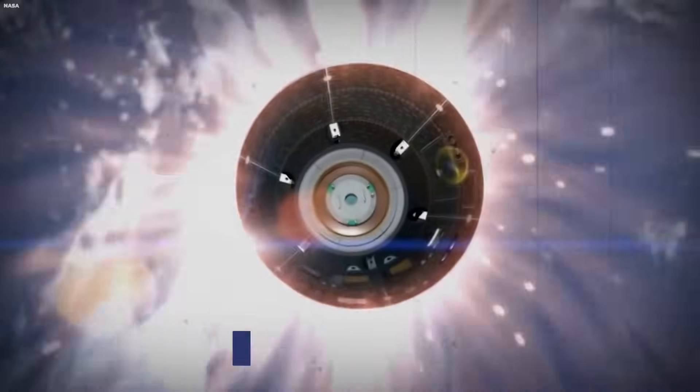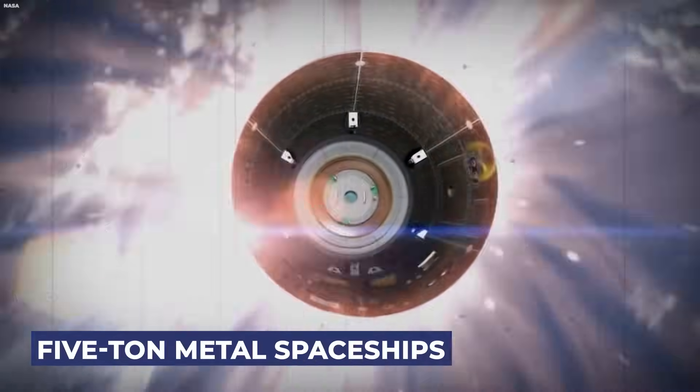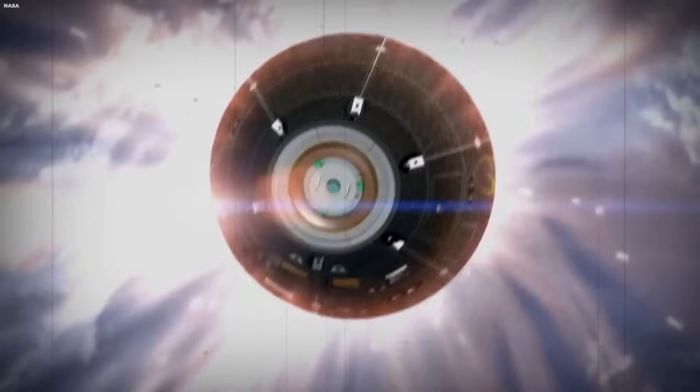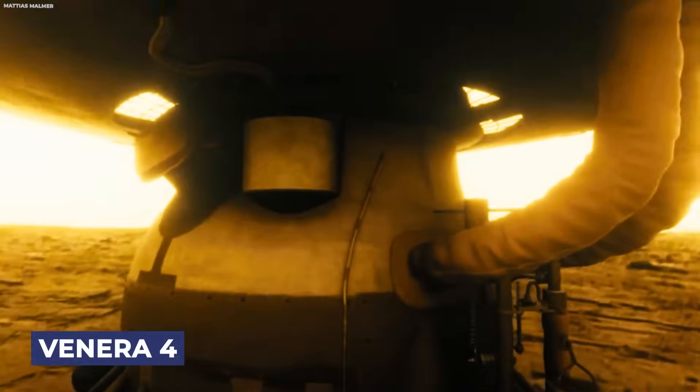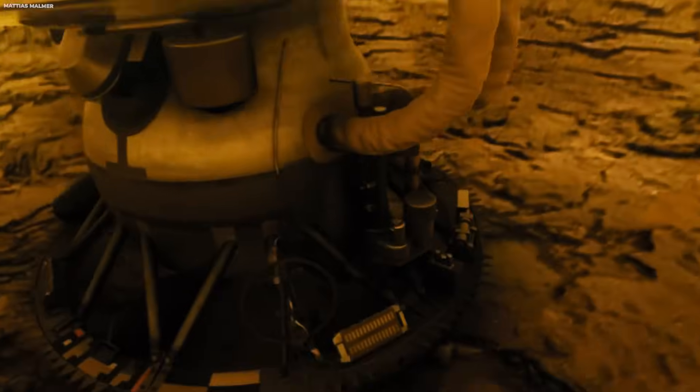The enormous pressure on Venus was first made clear to the Soviets when their first spacecraft entered the atmosphere and promptly exploded into a million pieces. Through a process of trial and error, five-ton metal spaceships were eventually constructed to survive the tremendous surface pressures for at least an hour.